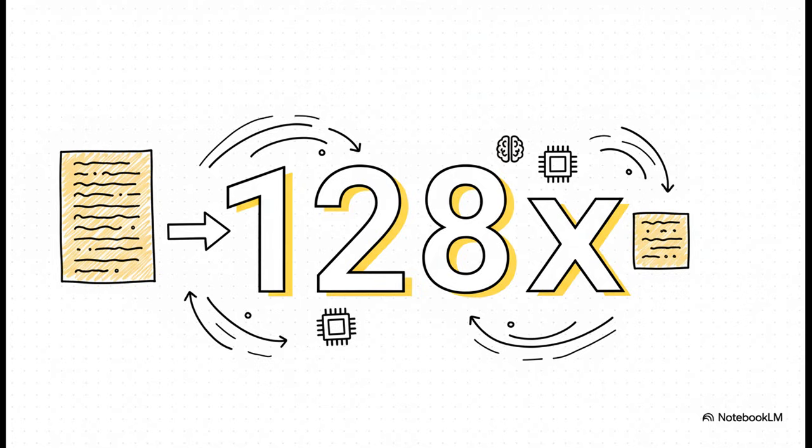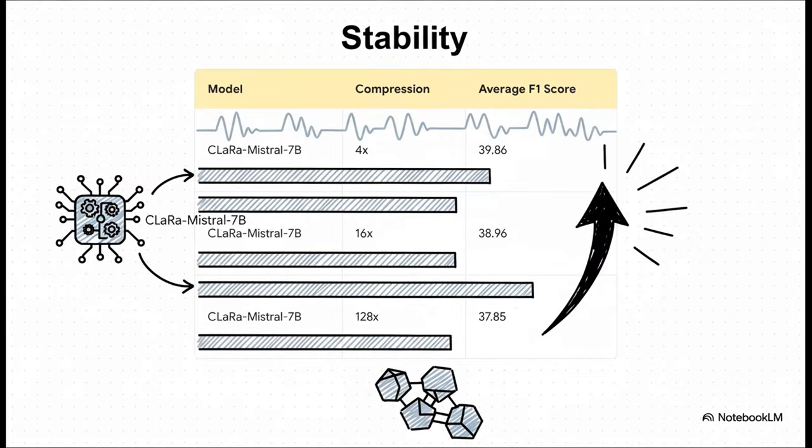And it gets even more wild. The researchers really pushed the limits here and cranked the compression all the way up to 128 times. That is like taking a full page of text and squishing it down into the equivalent of just a few words worth of data. And the absolutely insane part? It barely lost any of its reasoning ability. And you can see here just how incredibly stable the performance is. From 4x compression all the way to a mind-boggling 128x, the F-score, which is a measure of its accuracy, only drops by like two points. The big takeaway here is that this is not some lucky fluke. The model stays incredibly sharp even when the information is radically, radically compressed.